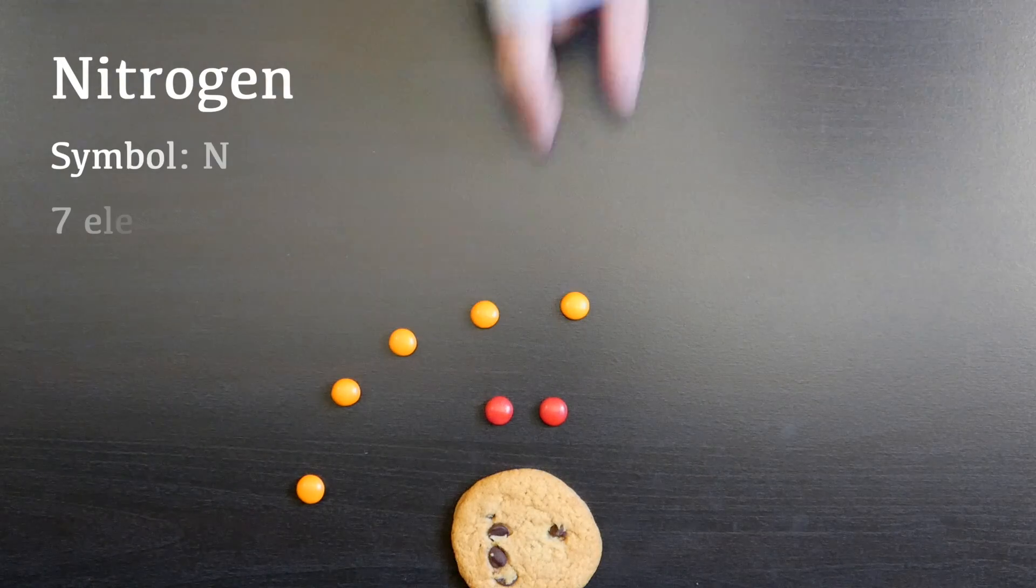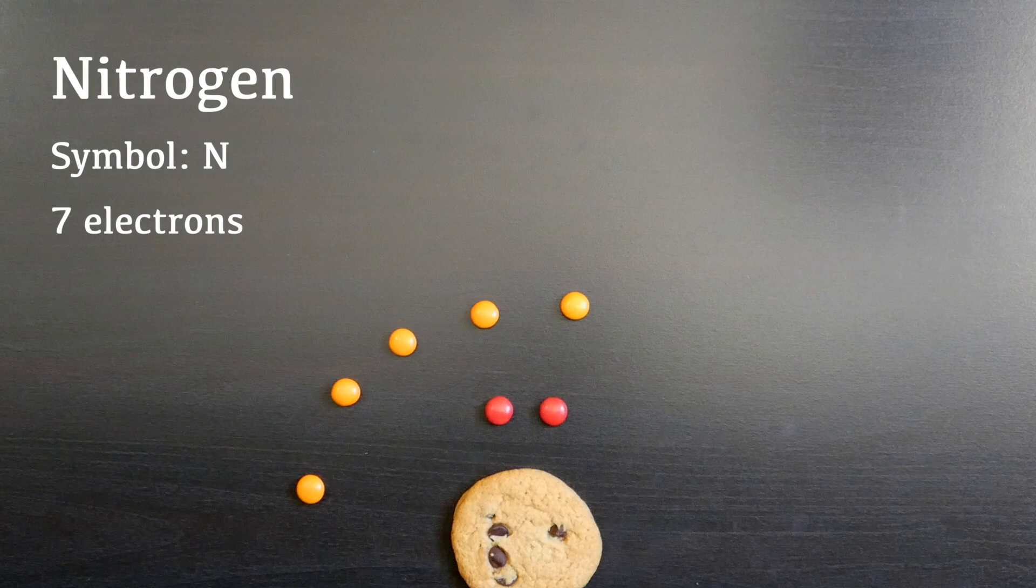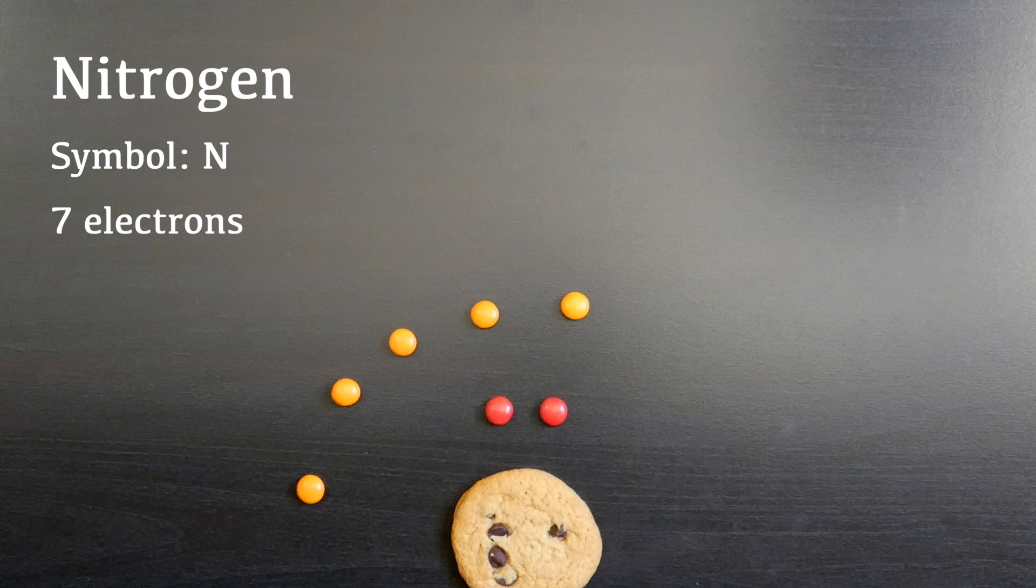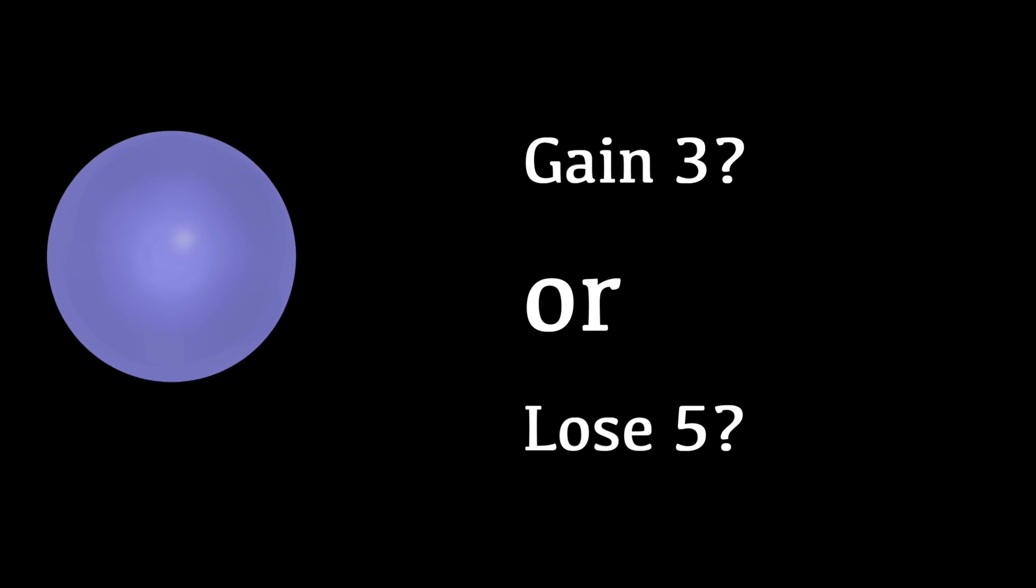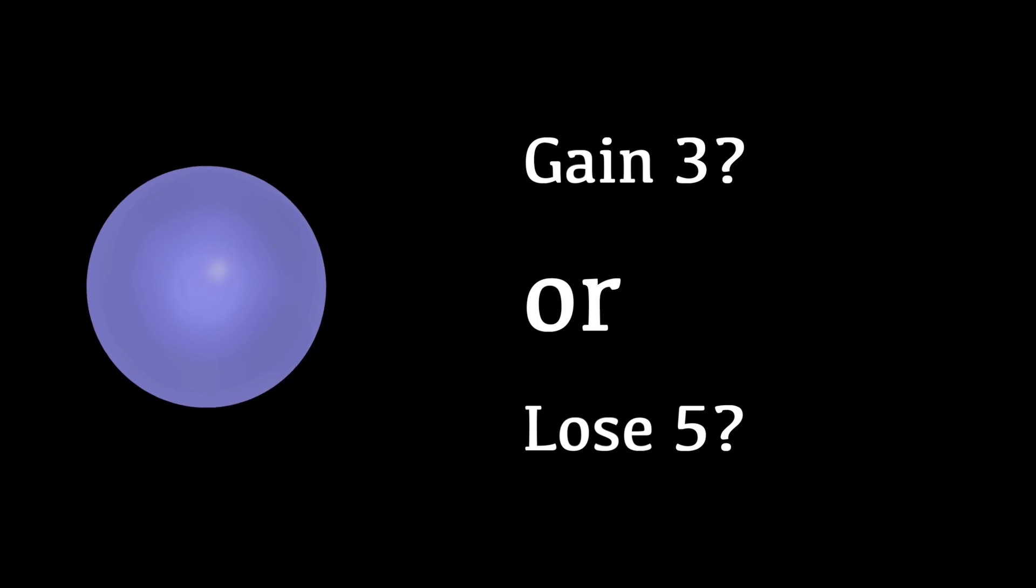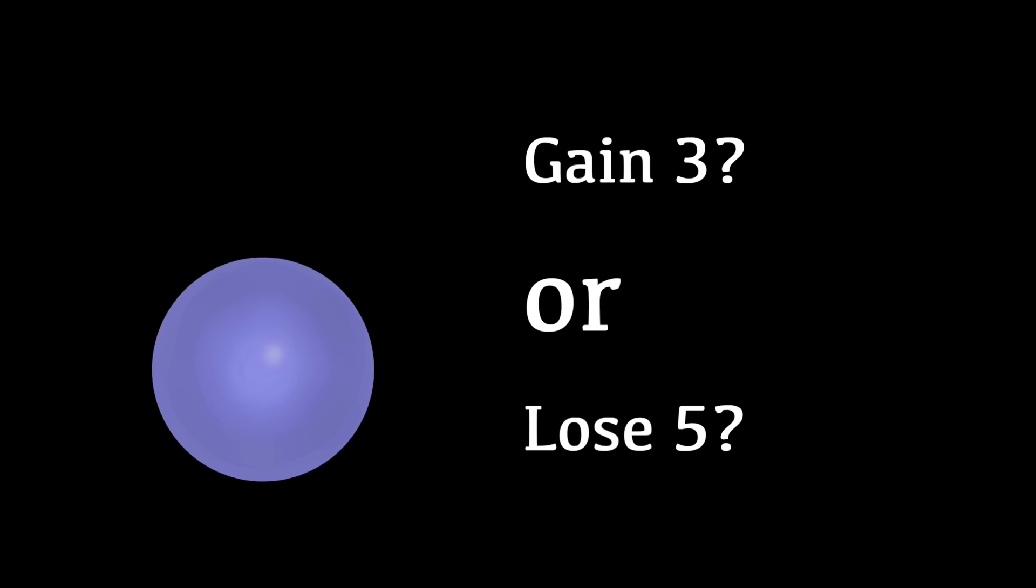After carbon comes nitrogen, the most common element in the air we breathe. We are now in the domain of atoms that would rather gain electrons than lose them. Nitrogen can gain three electrons to become stable, or it can lose five of them, and gaining three is more profitable.